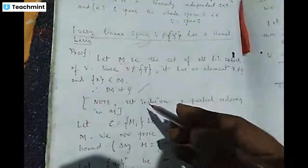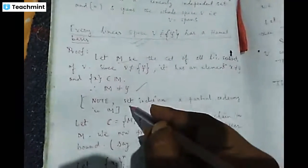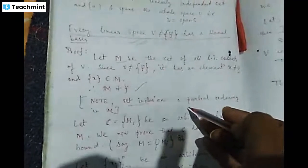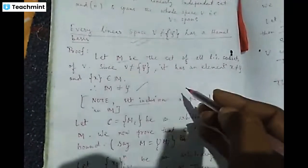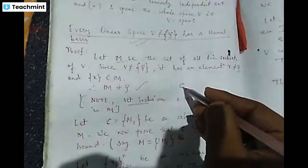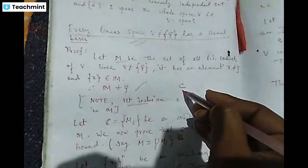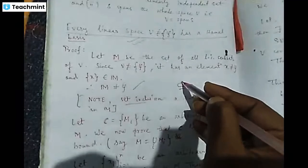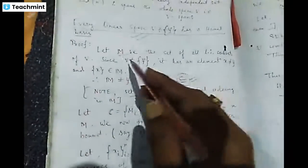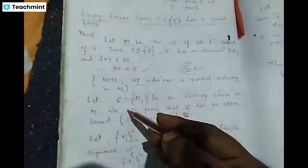There must be a partially ordering by set inclusion — you can say subset inclusion — that works in M. This is an important point: set inclusion works as a partial order under M.